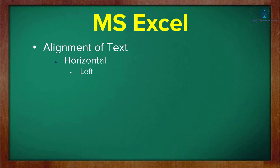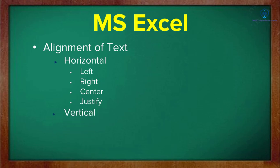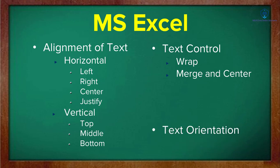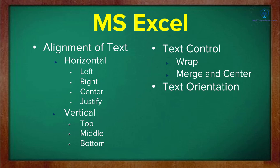We will see left, right, center, and justify. The other element is vertical alignment, which we will learn: top, middle, and bottom. We will also see text control — wrap text and merge and center — and finally text orientations.